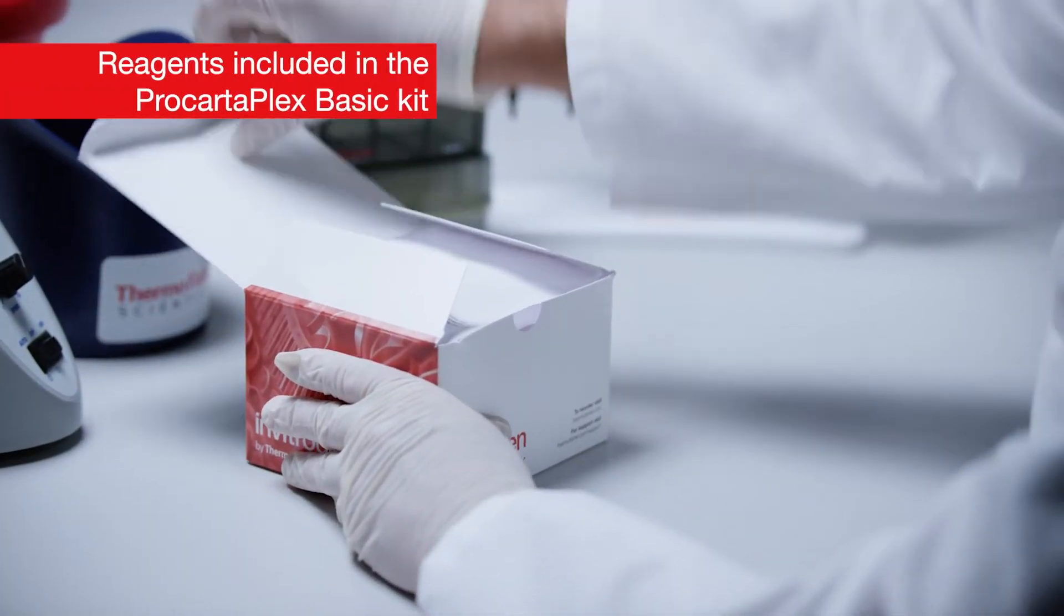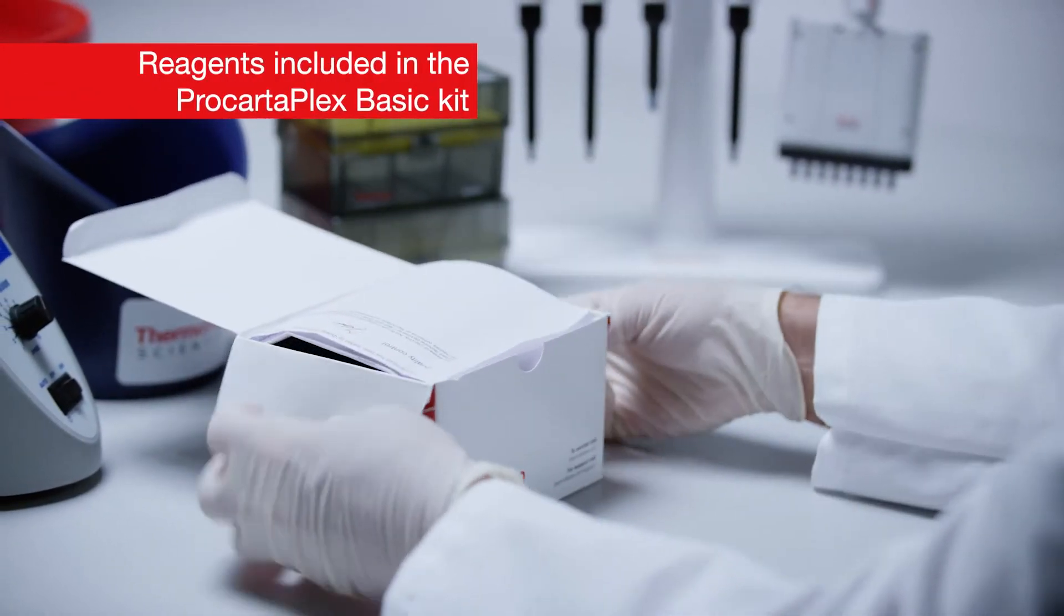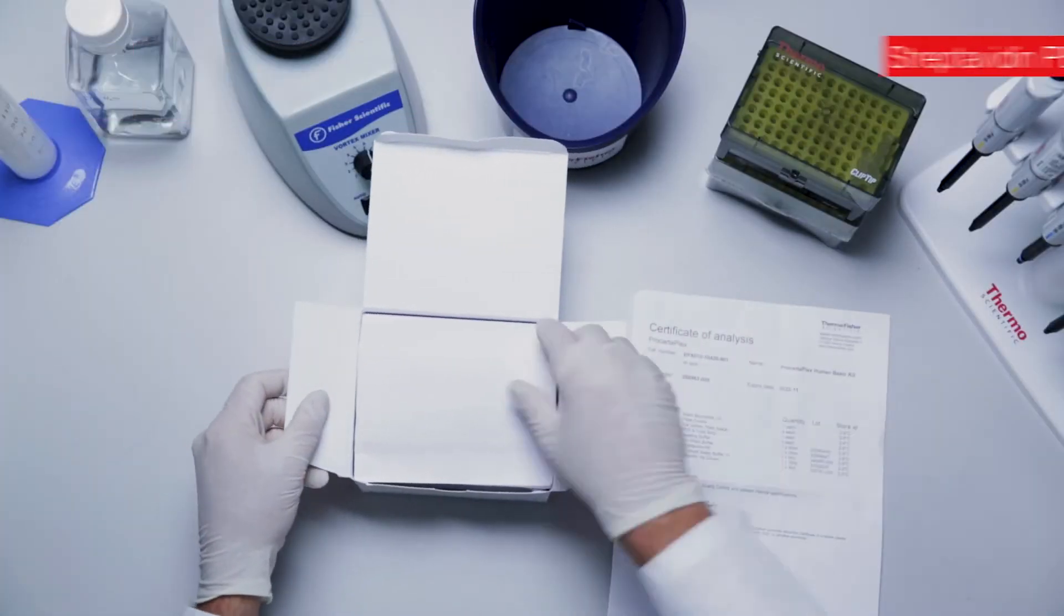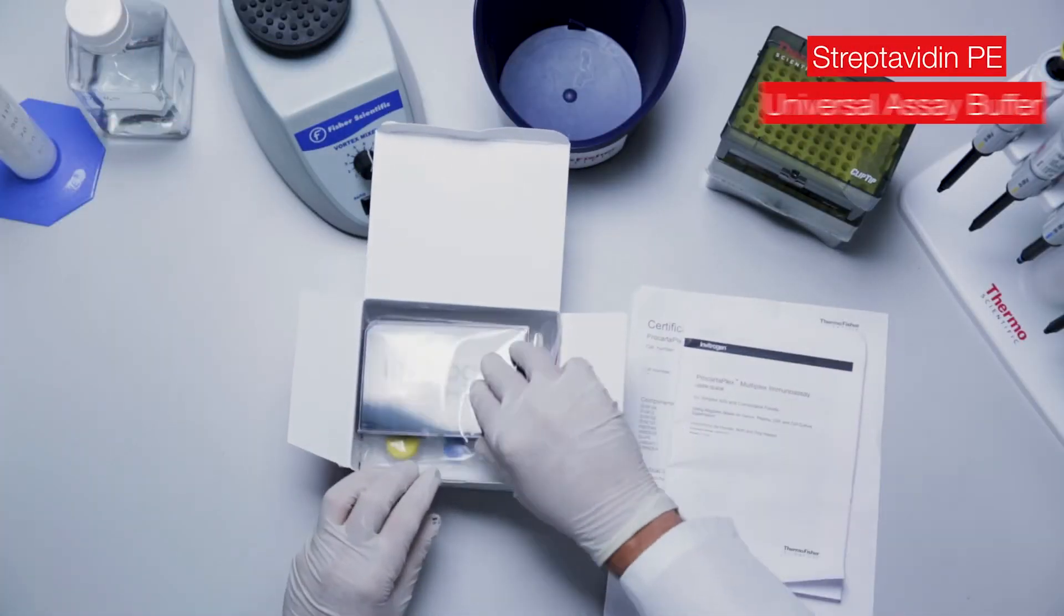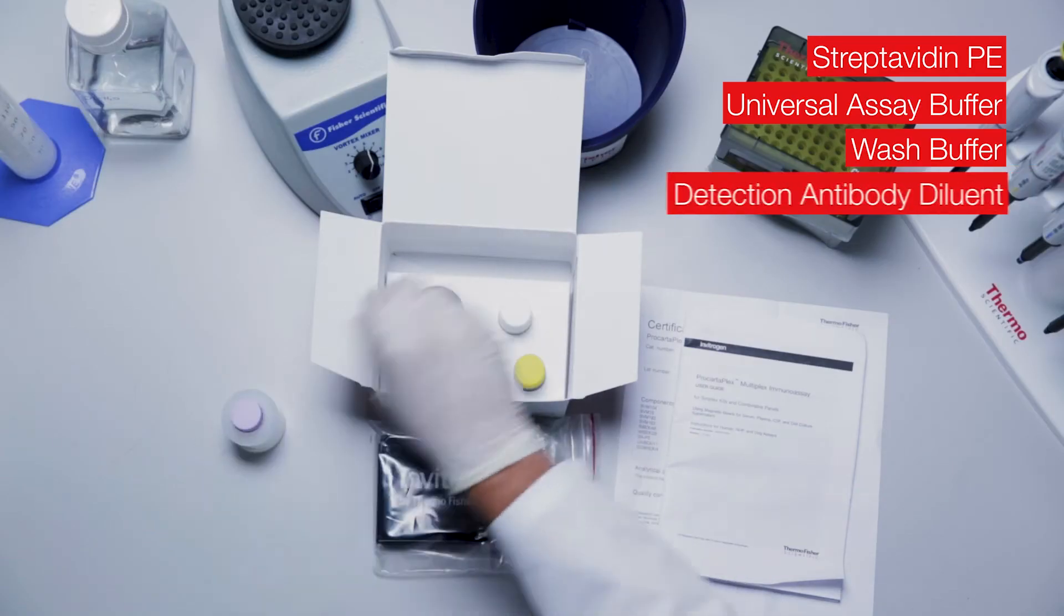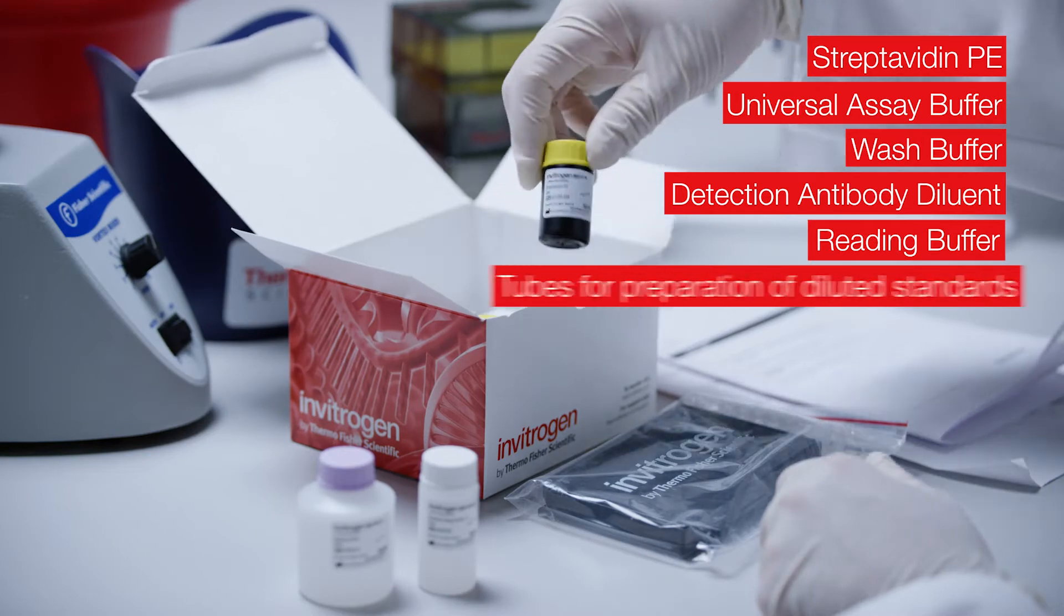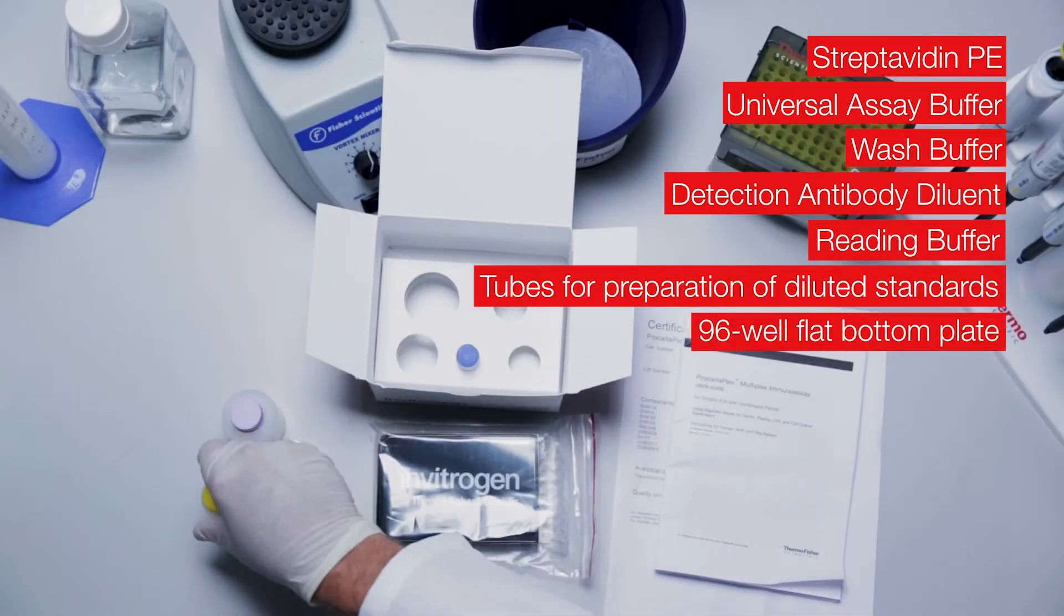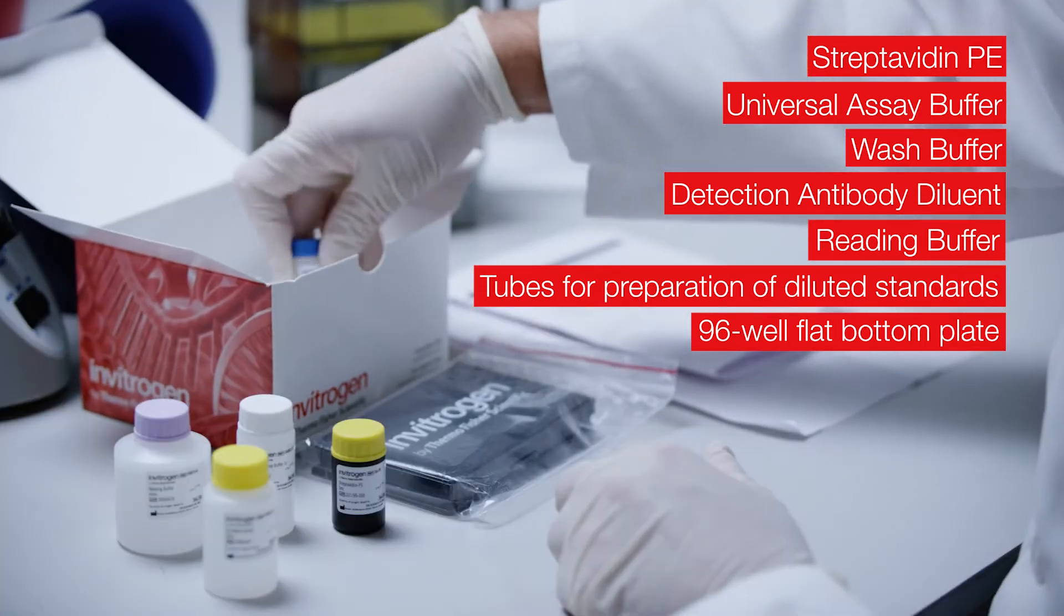Only one basic kit is required to combine the simplexes for an assay. The basic kit contains streptavidin PE, universal assay buffer, wash buffer, detection antibody diluent, reading buffer, tubes for preparation of diluted standards, a 96-well flat bottom plate, and plate seals.